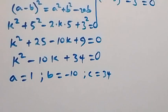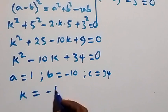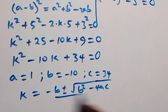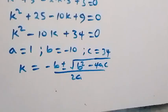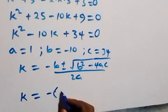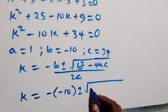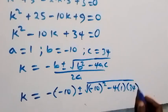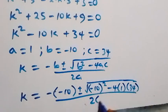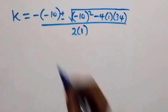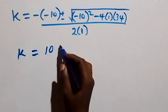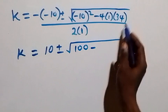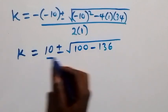Using the quadratic formula k equals minus b plus or minus square root of b squared minus 4ac over 2a, we have k equals minus (minus 10) plus or minus square root of (minus 10) squared minus 4 times 1 times 34, over 2 times 1. That gives us 10 plus or minus square root of 100 minus 136, over 2.